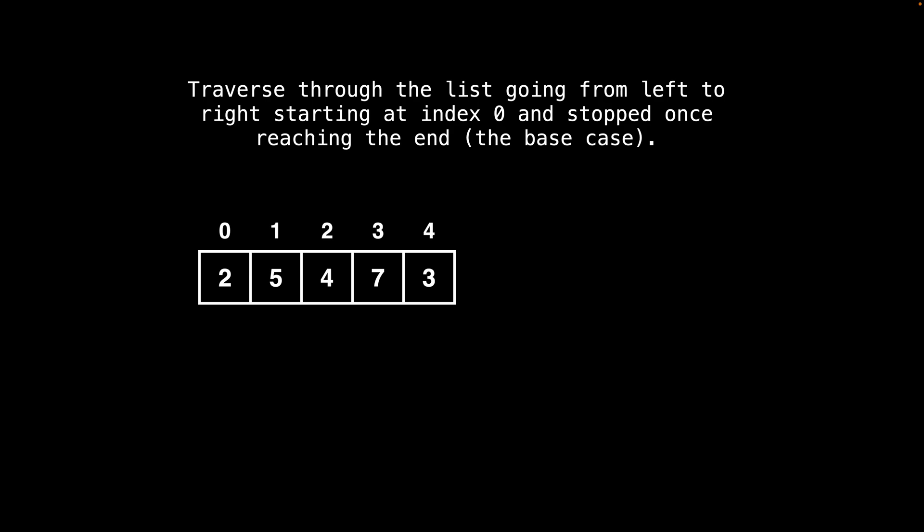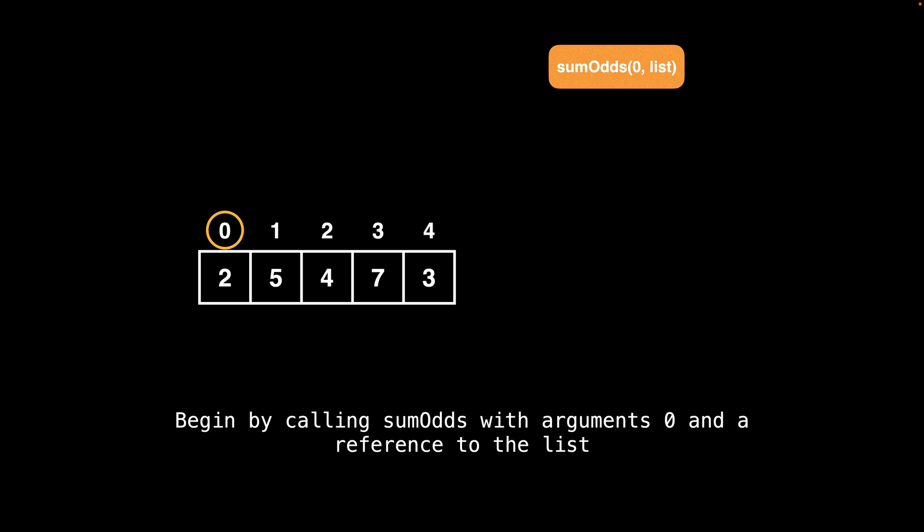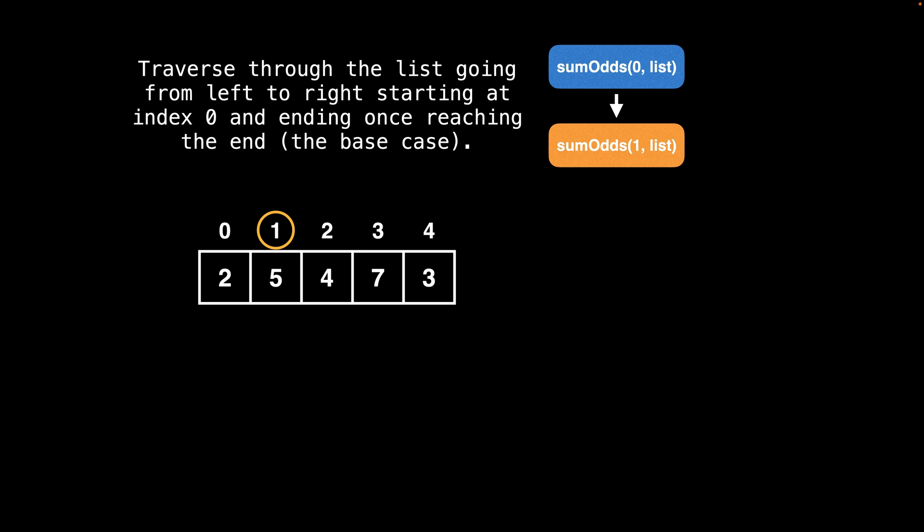The end of the list is effectively our base case for the recursion. Let's assume we have a function called sum_odds which can calculate the sum of all the odd numbers in the list. The function sum_odds would keep track of two things: the index position that we're at and a reference to the list. Since we want to begin summing all the odd numbers starting at the front of the list, we would call sum_odds with index position zero and pass the reference to the list. We then recursively call the function incrementing the index position, calling sum_odds on each element until we reach the end, checking whether each element is odd and adding it to the total.